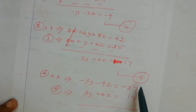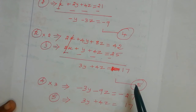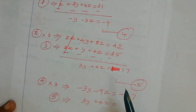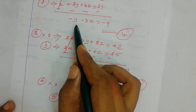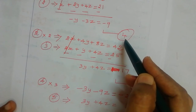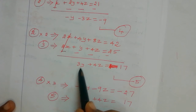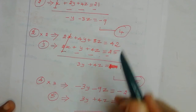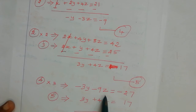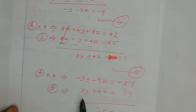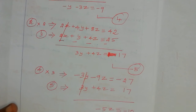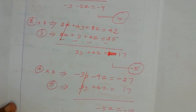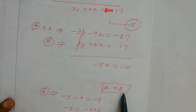Using equation 4 and equation 5, we eliminate y. Multiply equation 4 by 3 so the coefficient of y becomes minus 3y: minus 3y minus 9z equal to minus 27. Adding equation 5 to this, minus 3y plus 3y cancels, giving 5z equal to minus 10. Wait — so z equal to 2.